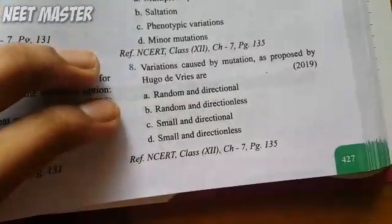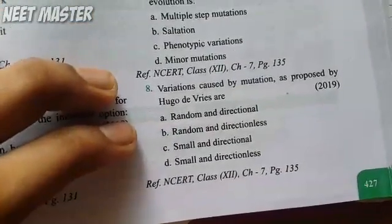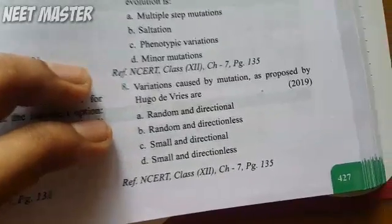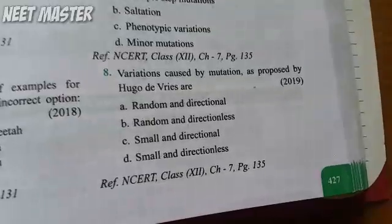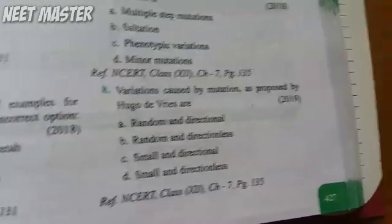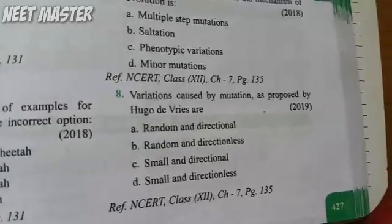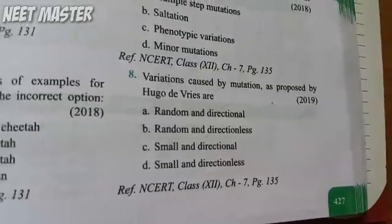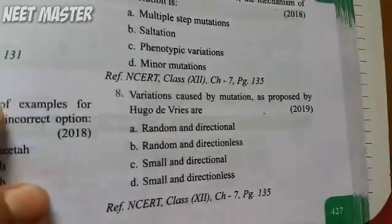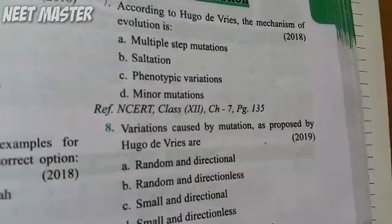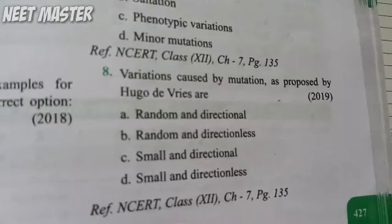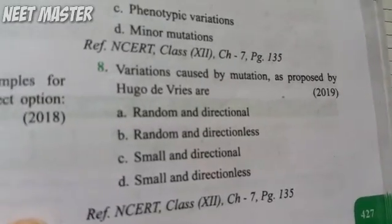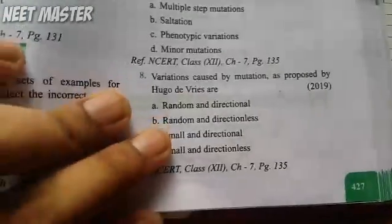Variations caused by mutation as proposed by Hugo de Vries are: random and directional; random and non-directional; small and directional; or small and non-directional? The answer is random and non-directional — mutations from Hugo de Vries are random and non-directional.